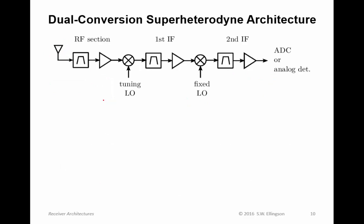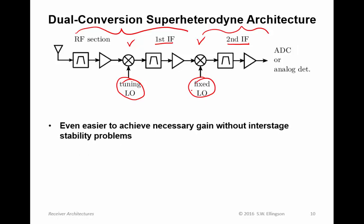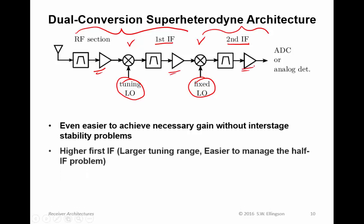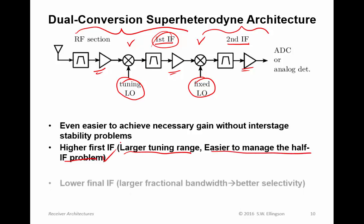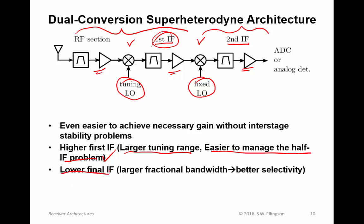With this in mind, we arrive at dual conversion superhet architecture. In dual conversion, we have two frequency conversions and two IFs. The first IF is reached using a tuning LO — very similar to single conversion — but then one more conversion reaches the final output frequency, done with a fixed LO. This makes it even easier to achieve the necessary gain without interstage stability problems, since gain is distributed over three stages. We get a higher first IF, facilitating larger tuning range and easier management of the half-IF problem. And the lower final IF provides larger fractional bandwidth for that filter, meaning better selectivity.